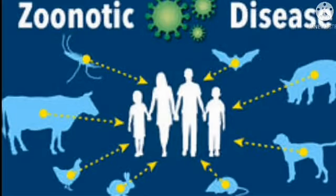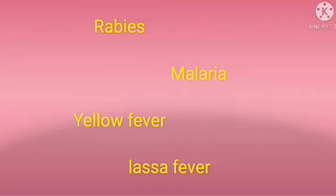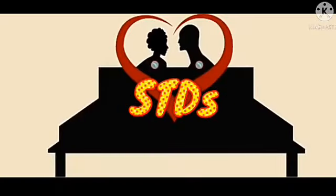There are also diseases spread through animals and parasites that carry these diseases. Examples include rabies, spread by dogs; malaria fever, spread by mosquitoes; yellow fever by the Aedes mosquito; and Lassa fever, spread by rats. These are diseases that can be spread with the aid of disease vectors — animals that carry the disease from one host to another.